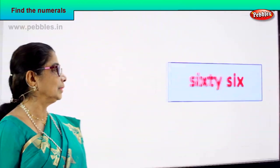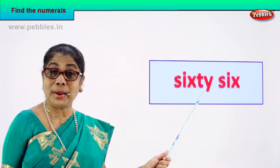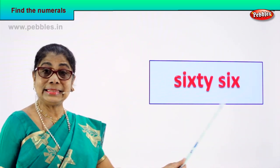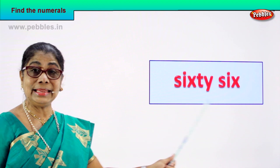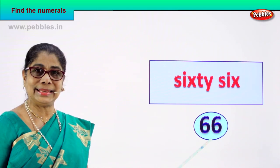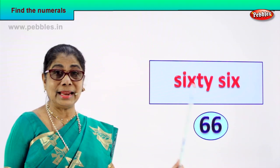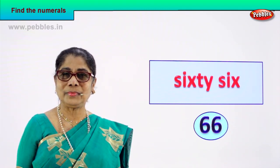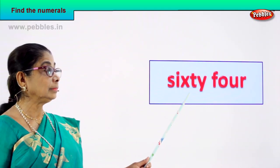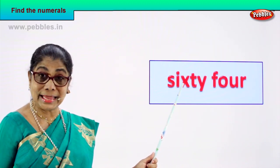Good. Shall we go to our next number name? Good. Look: S-I-X-T-Y, sixty, S-I-X, six — 66. So what will be the numeral? 66. How do we write 66? 6 and 6 — 66. 66 is the numeral for this number name. Good.